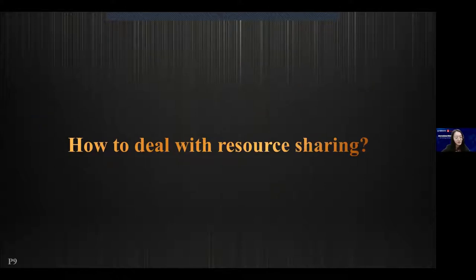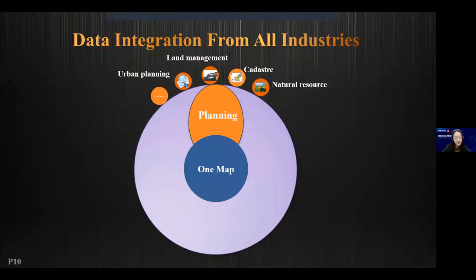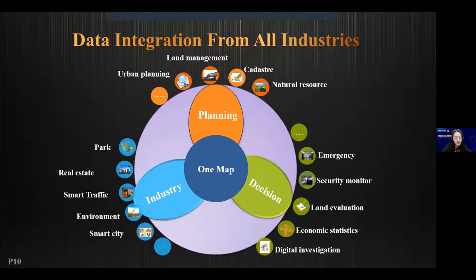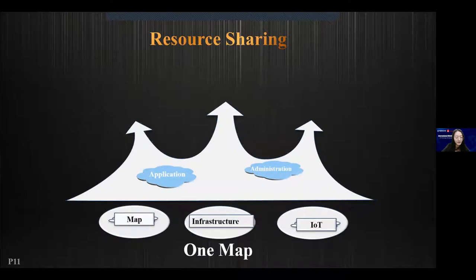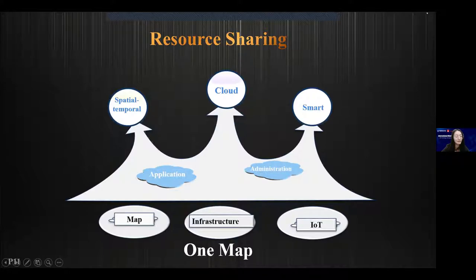For the first question — how to deal with resource sharing — through data from all kinds of industries like land planning, environment, traffic, and administration authority, it could achieve cross-level, cross-region, and cross-business data sharing and application systems. Building the OneMap platform could support the whole region, and OneMap could achieve spatial and temporal coverage, with all infrastructure and applications on the cloud for a smarter cloud framework.